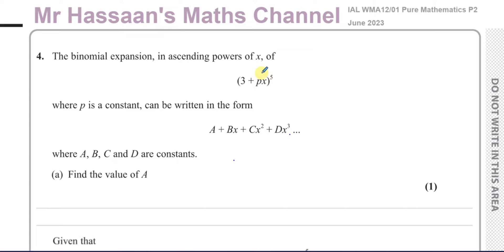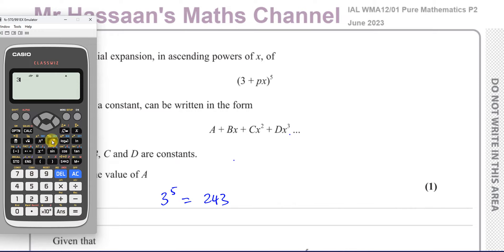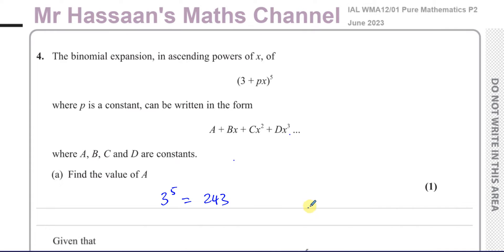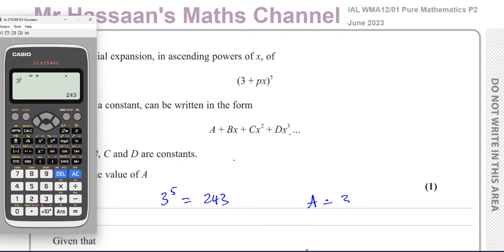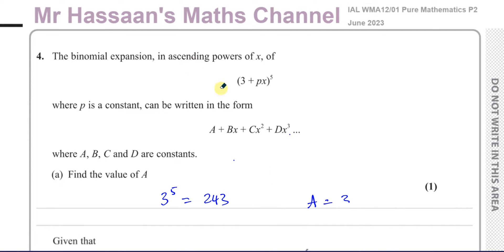Of course, when you raise this whole thing to the power of 5, A is a constant term without any x. So that's going to be just given by 3 to the power of 5. And so 3 to the power of 5 is 243. So the value of A is equal to 243.